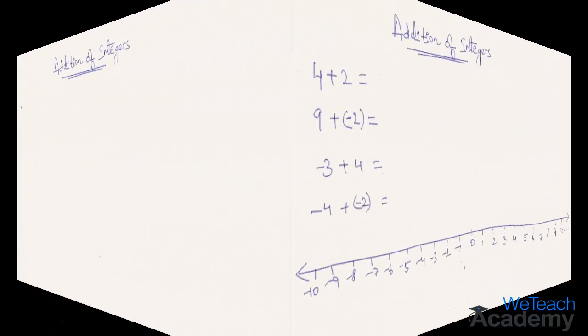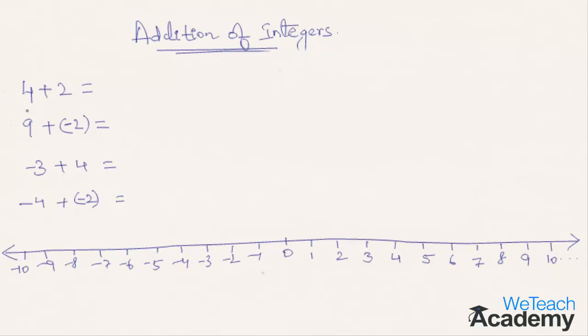The examples listed here are: 4 plus 2, 9 plus minus 2, minus 3 plus 4, and minus 4 plus minus 2. All of these are quite different from each other because we are adding positive numbers to negative numbers, negative to negative, and so on.